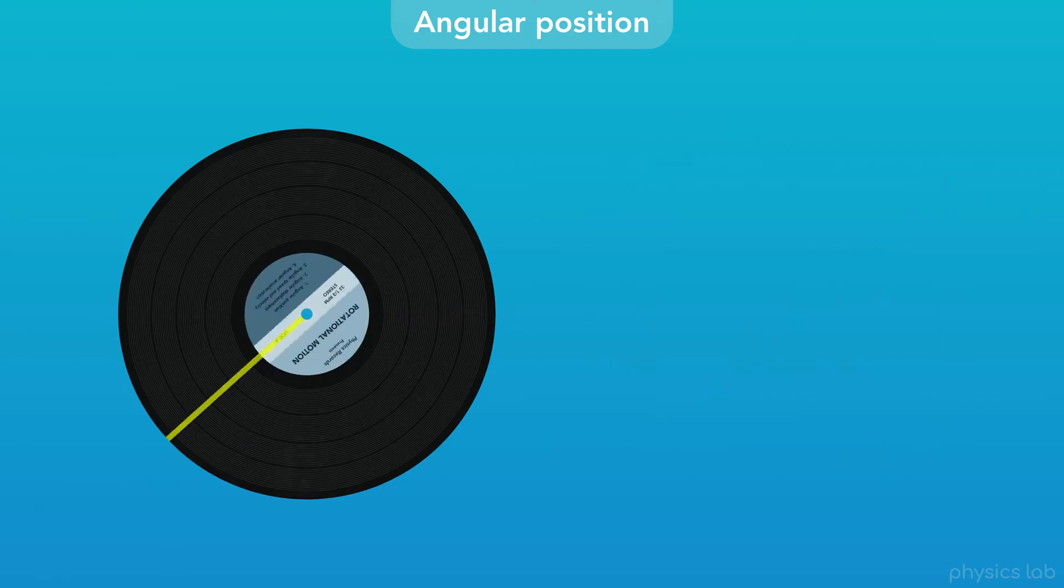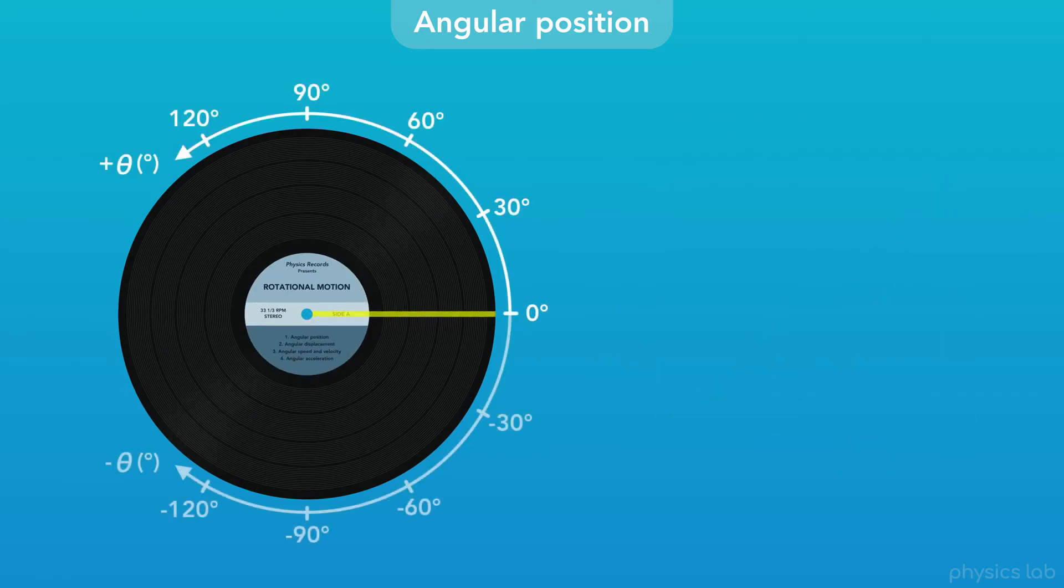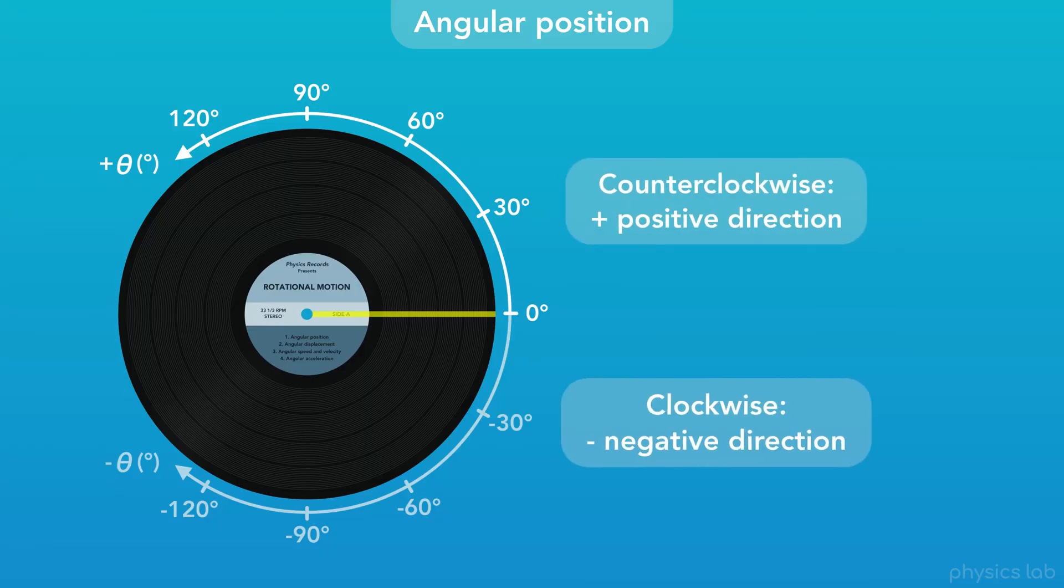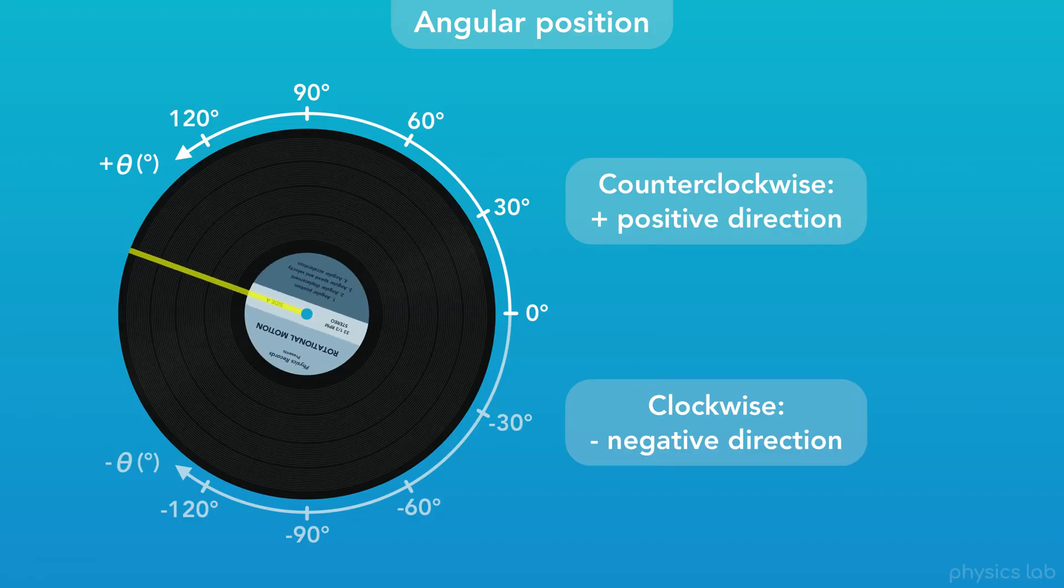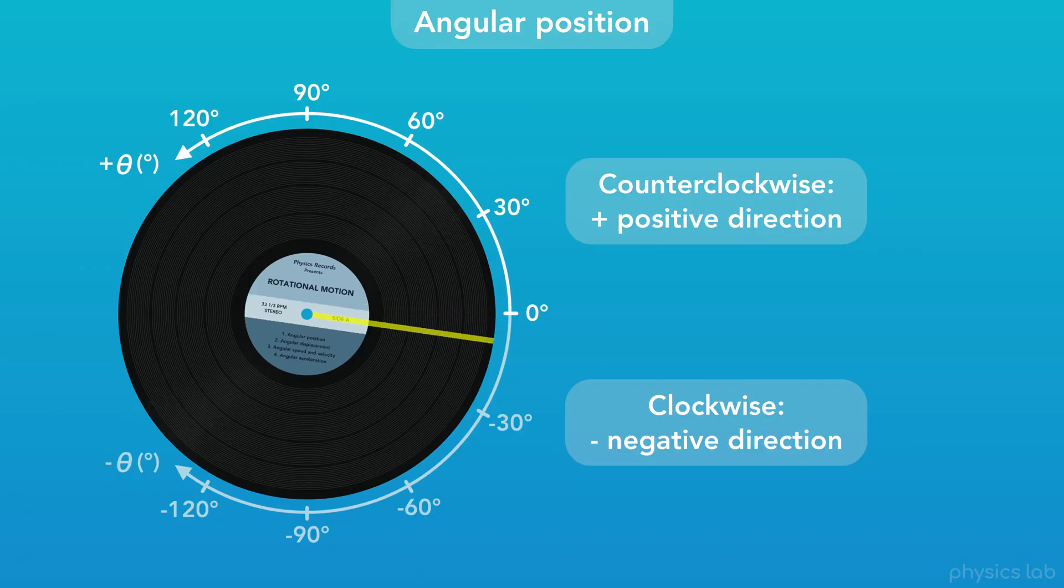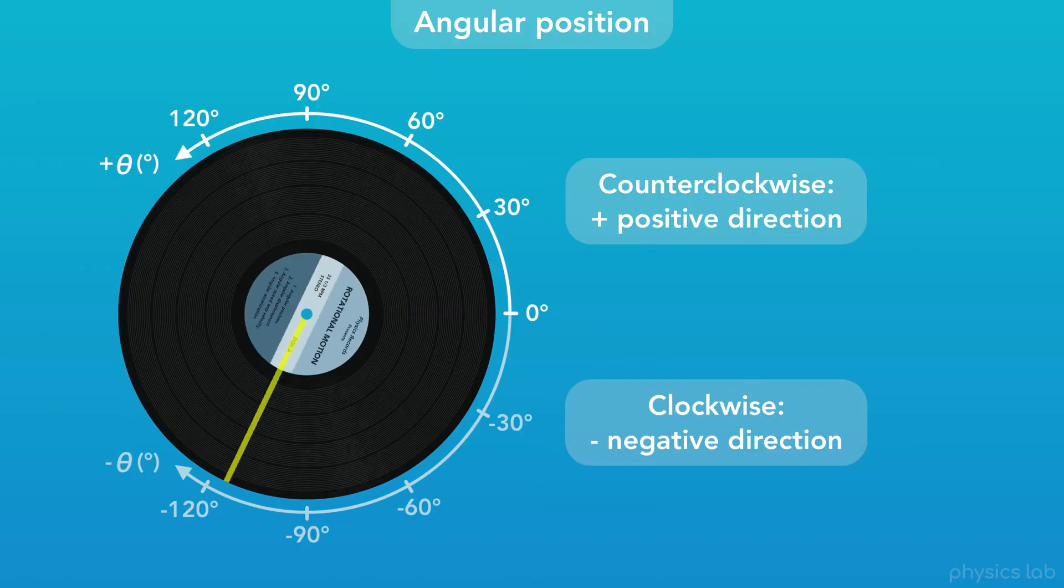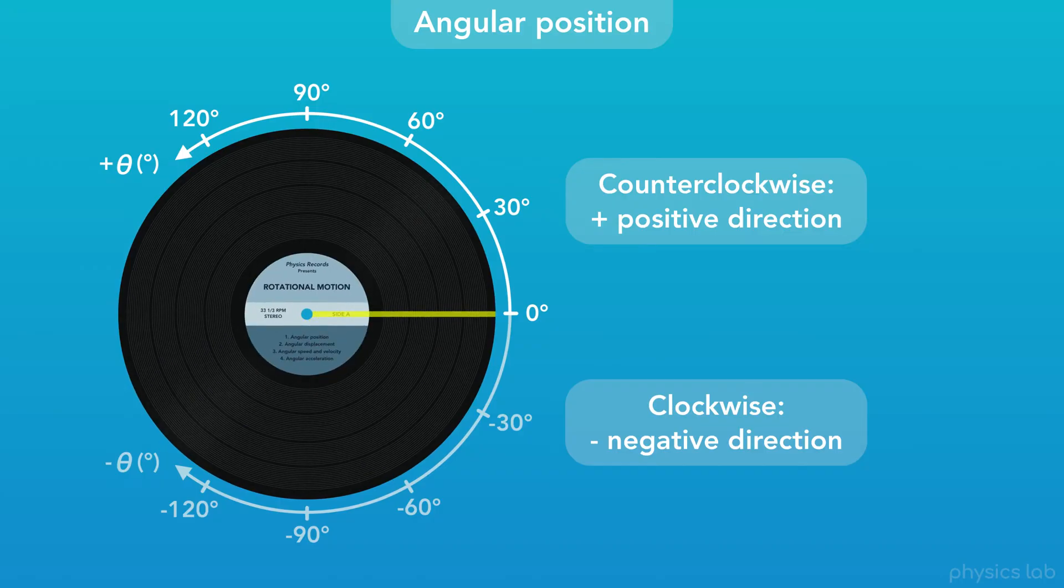And what if the record rotates the other way? With any type of motion, we establish a positive and negative direction when we set up our axis. Counterclockwise is considered the positive direction, and clockwise is considered the negative direction. The record can rotate as far as it wants in either direction, and we measure its angular position relative to the zero point that we established.